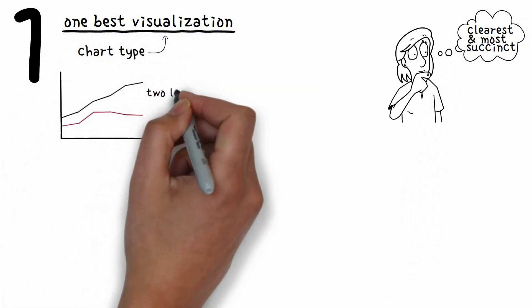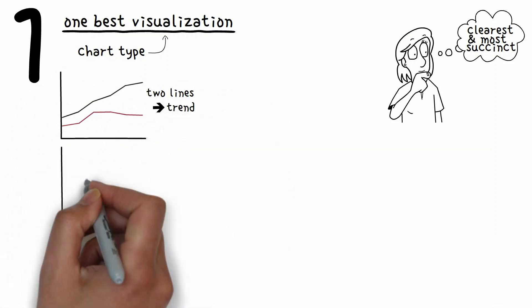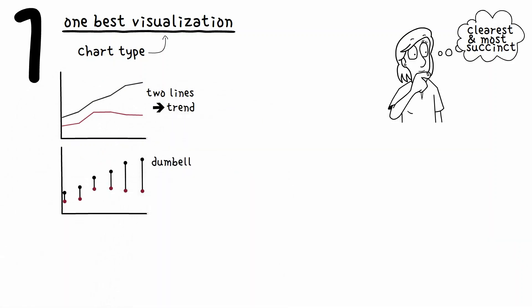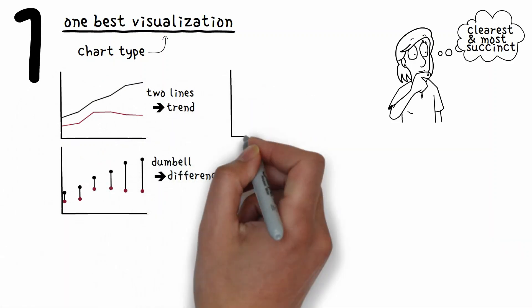For example, two lines on a chart make it easy to see their trend, but a dumbbell chart makes it easy to see the differences between the lines.